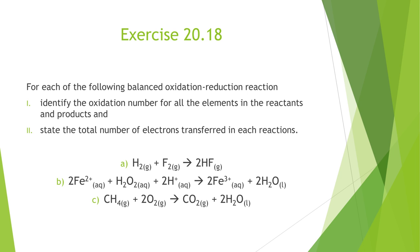For each of the following balanced oxidation-reduction reactions, first identify the oxidation number for all the elements in the reactants and products, and then state the total number of electrons transferred in each reaction.